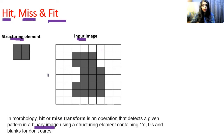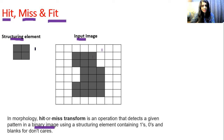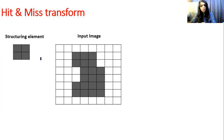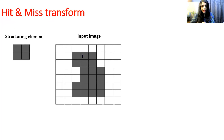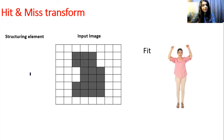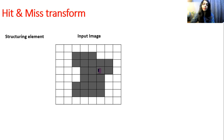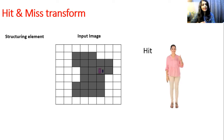This is the structuring element. When we overlay this structuring element at a position where all four white pixels overlap with all four black pixels of the image, it is called a miss — not a single black pixel is overlapping with each other. When we overlay all four black pixels of the structuring element with all four black pixels of the input image exactly, it is called fit. And when at least one black pixel overlaps with one black pixel, it is called a hit.